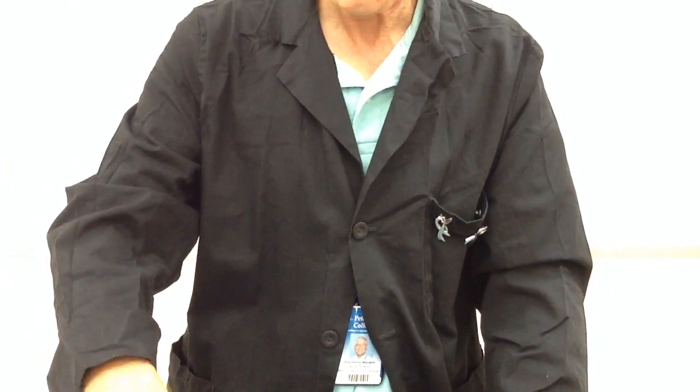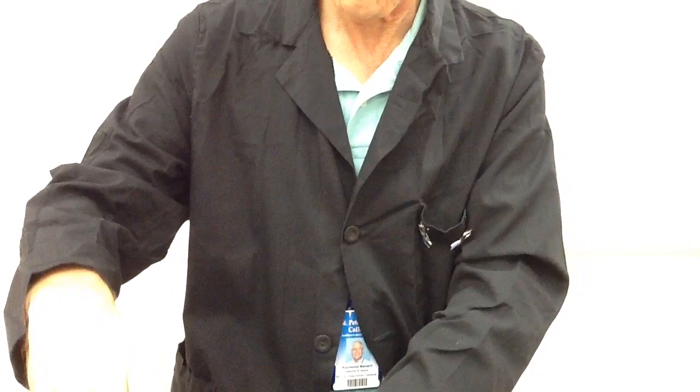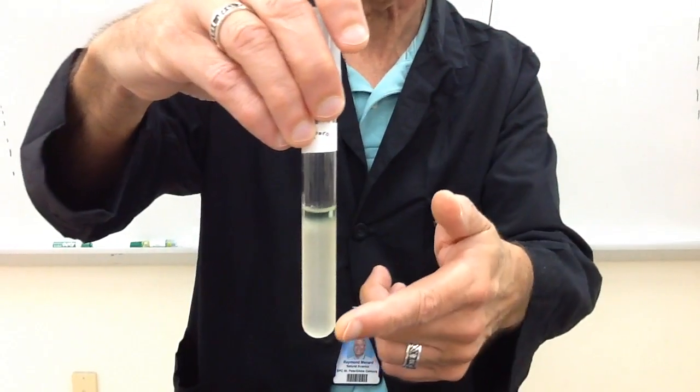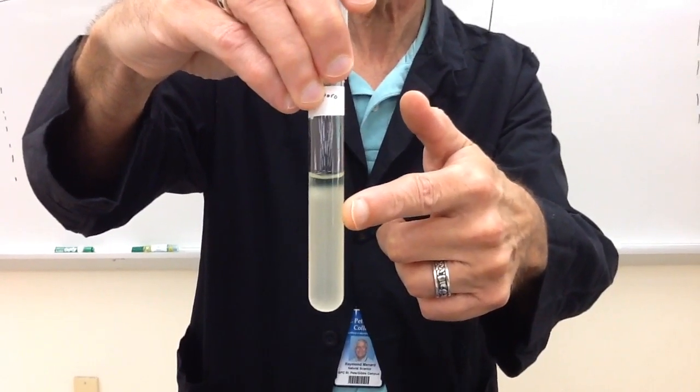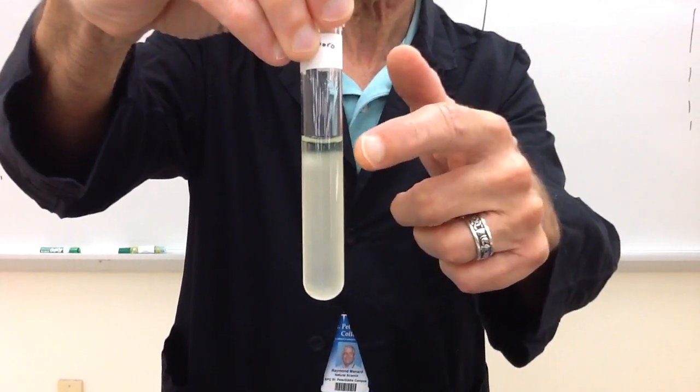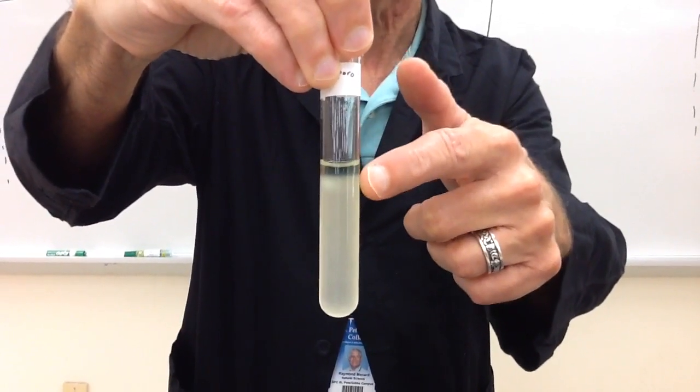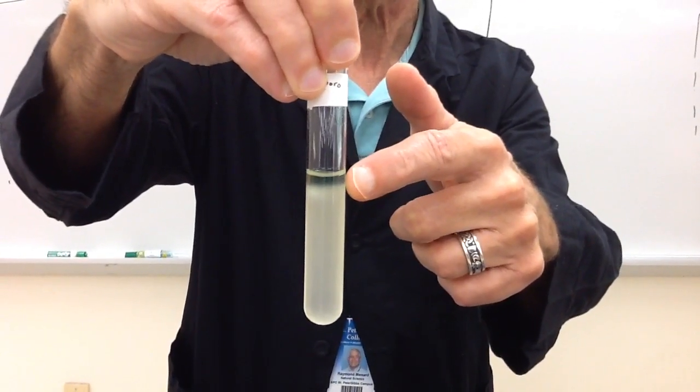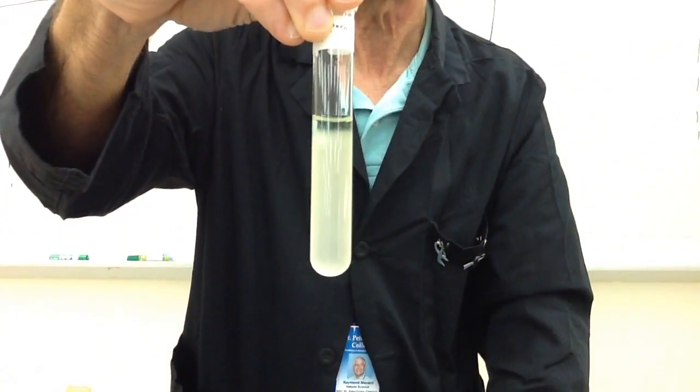Our last one is Clostridium sporogenes, and this one is beautiful. If you take a look, it grows really well down here. If you follow the growth up, you can see this clear area here. That's where the oxygen's at. You can see the green color there, and that's perfectly clear. This is your example of an obligate anaerobe.